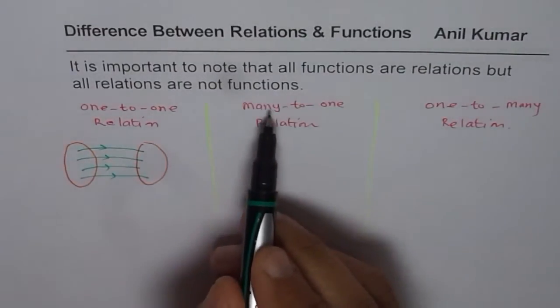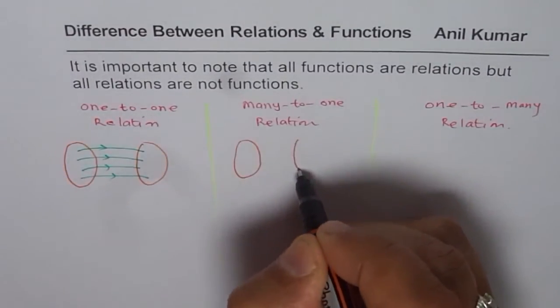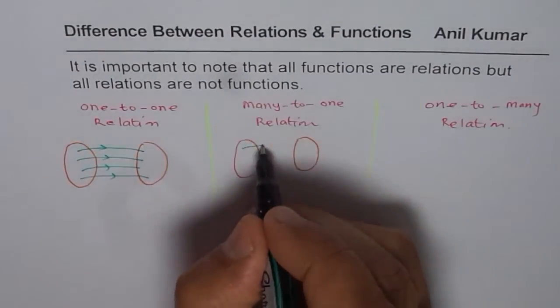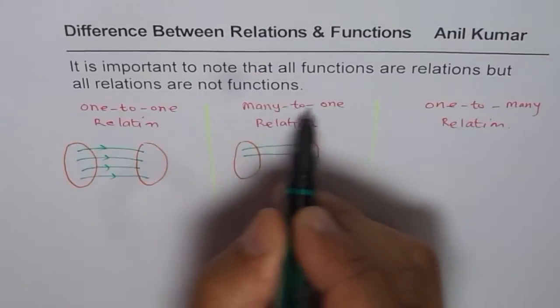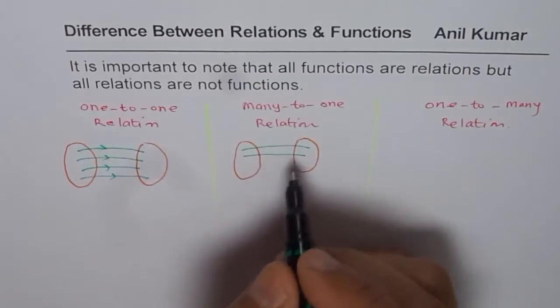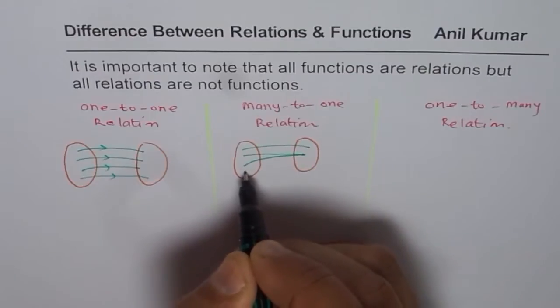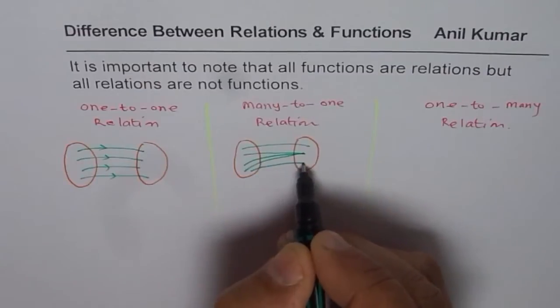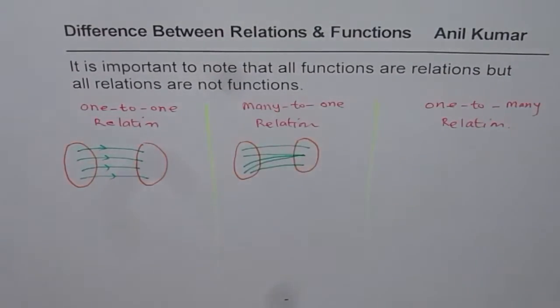When we say one-to-many, it really means that the relation is kind of like this. Many-to-one we are talking about, many could correspond to one. For example, this, it could be like this also. Even if for one element in the range many are connected, this will be called many-to-one relation.